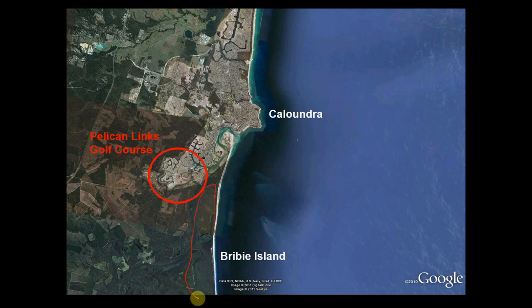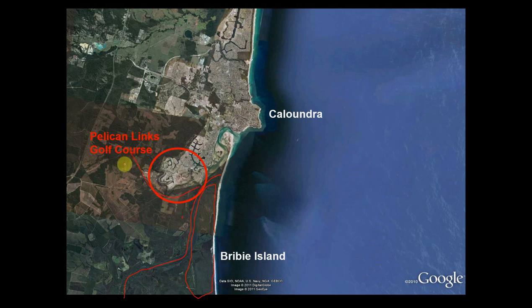In terms of regional context, Bribie Island is a lovely sand island just off the coast. Between Bribie Island and the mainland is Palmerstone Passage, which has incredible fisheries values and is part of a Ramsar wetland — an internationally significant wetland for migratory species. For the last few decades, the local government has been trying to stop further development sprawling south and impacting the natural and fisheries habitat values around Palmerstone Passage.